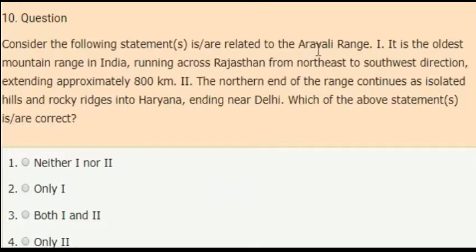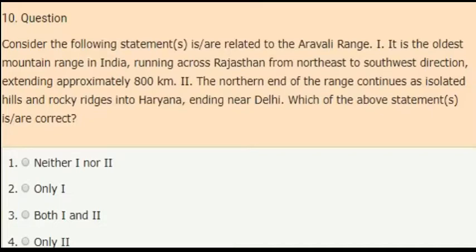Last question: consider the following statements related to the Aravali range. First statement: it is the oldest mountain range in India, running across Rajasthan from northeast to southwest, extending approximately 800 km. Second statement: the northern end of the range continues as isolated hills and rocky ridges into Haryana, ending near Delhi. The correct answer is only statement two is correct — the northern end of the Aravali range continues as isolated hills and rocky ridges into Haryana, ending near Delhi.